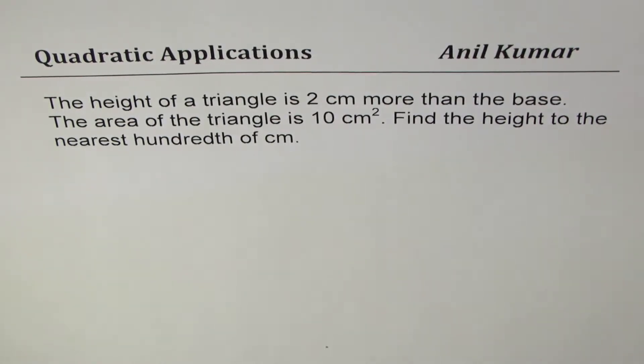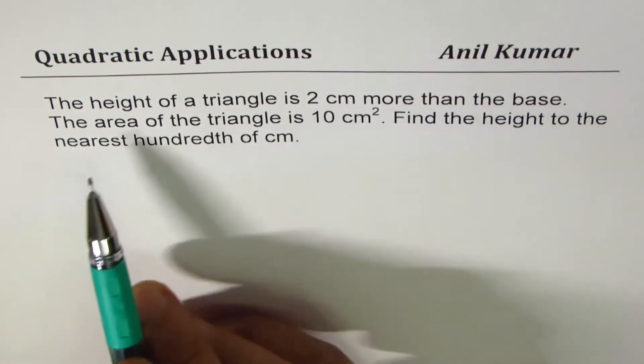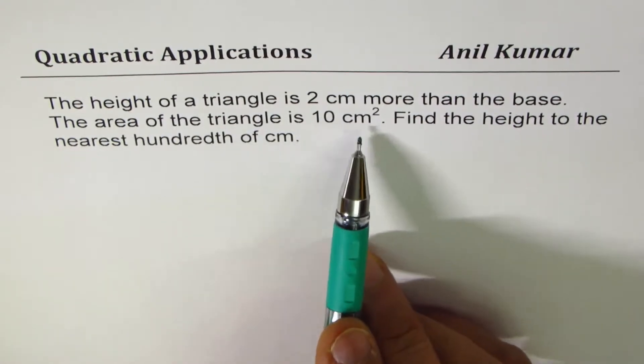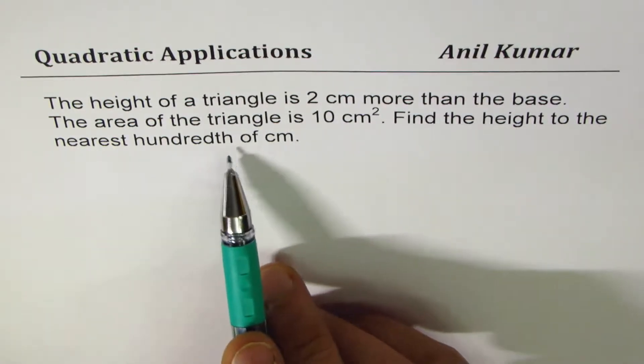The question here is: the height of a triangle is two centimeters more than the base. The area of the triangle is 10 centimeters square. Find the height to the nearest hundredth of centimeter.